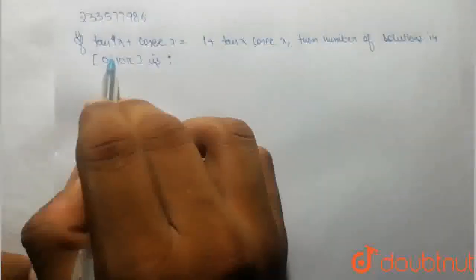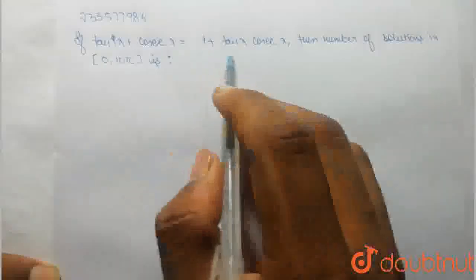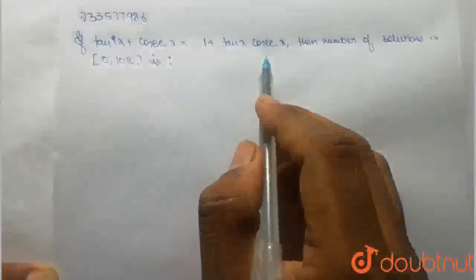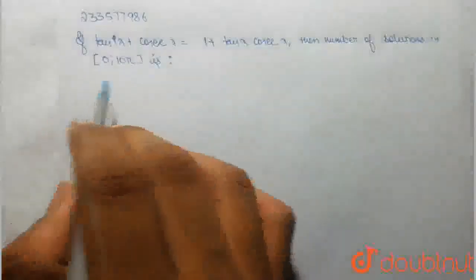Now the question is, if tan x plus cosec x is equal to 1 plus tan x into cosec x, then the number of solutions in 0 to 10π is?